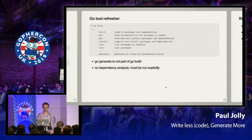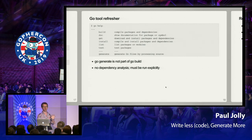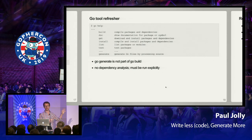It's important to note that code generation is not part of the build process. It's a step you must explicitly run before anything build-related — i.e. build, test, install, etc. But go generate encapsulates the complexity of which code generators to run in which packages. One slight snag: there is no dependency analysis. If you have package A that imports package B and both do code generation, go generate won't run them in the right order — B before A.